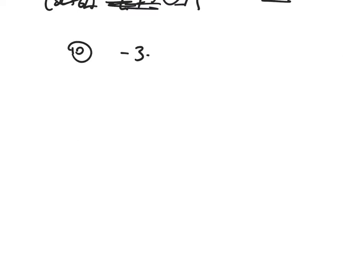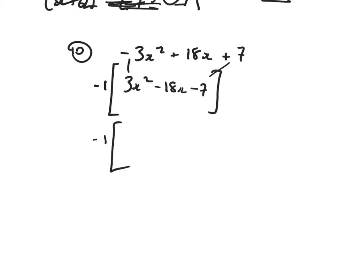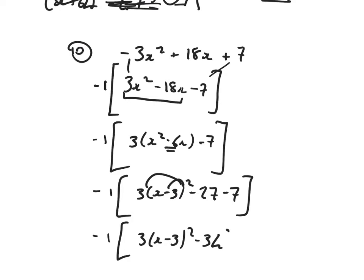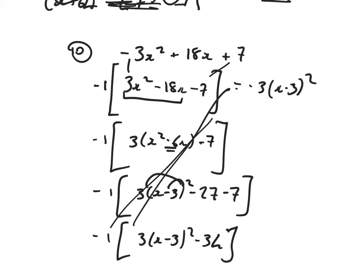Let's try another: minus 3x squared plus 18x plus 7. First take out the common factor of minus 1, which changes the sign of everything: 3x squared minus 18x minus 7. Then take out my numerical common factor of 3: bracket x squared minus 6x, close the bracket, minus 7. Half the minus 6 down to a minus 3, create a squared bracket with the 3 at the front. Minus 3 squared is 9, times 3 is 27 — get rid of 27 and take away 7. That's 3 bracket x minus 3 all squared minus 34. Opening it out gives minus 3 bracket x minus 3 all squared plus 34.